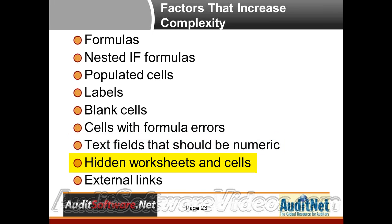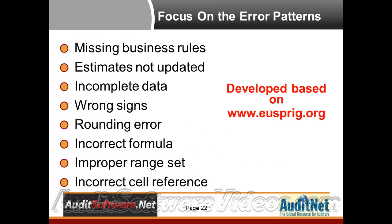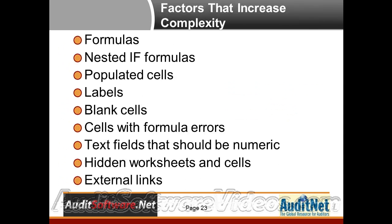Hidden worksheets and cells — a lot of times we hide columns and rows, and it makes it a lot easier to see things, but then if somebody's auditing it, they don't see the column that is driving that calculation. And then external links as well. These are all things that, as I look at the error patterns, are more tangible things that we can work with and talk about.